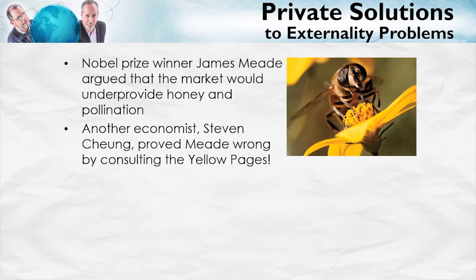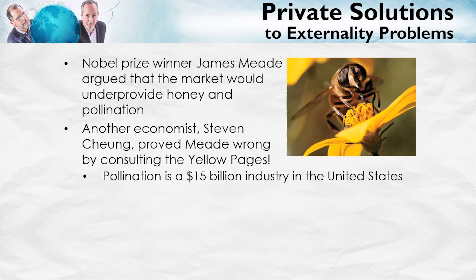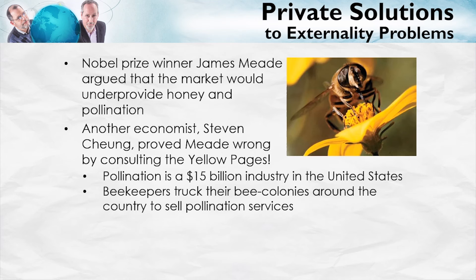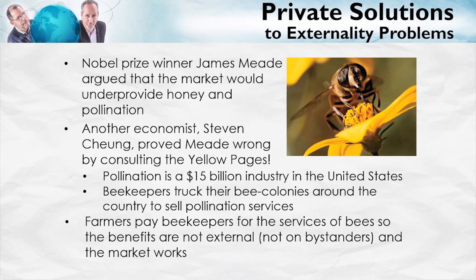He did so by consulting the Yellow Pages. Chung discovered that pollination in the United States, in fact, is a $15 billion industry. Beekeepers regularly truck their bee colonies around the country, and they sell their pollination services to farmers. Because the farmers are paying the beekeepers for the services of the bees, the benefits, in fact, are not external. They're not on bystanders. And the market works.